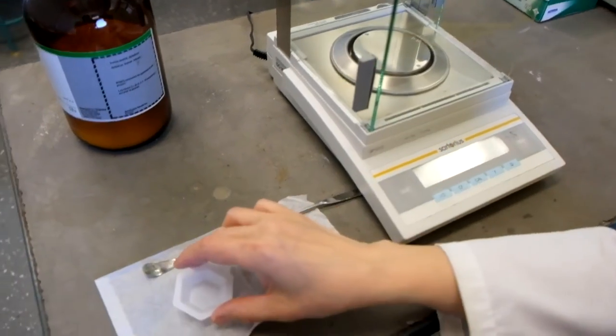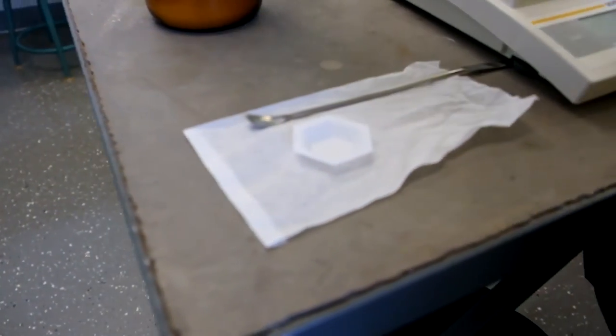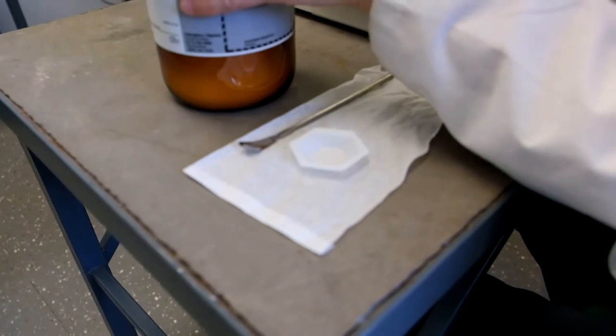Remove the weigh boat from the balance chamber and, using a spatula, add the sodium acetate to the weigh boat.